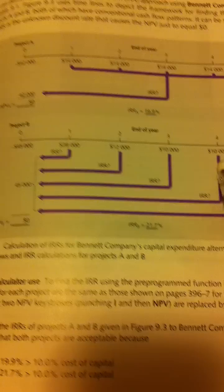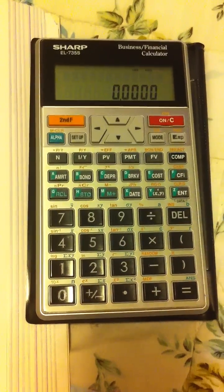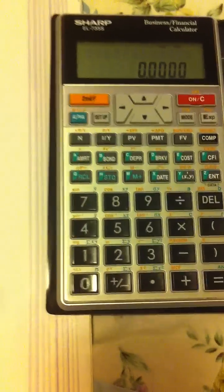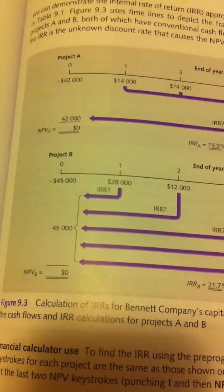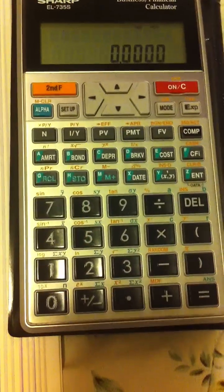This type of question is called uneven cash flow and I'm going to use the Sharp EL-735 as a calculator for IRR. First thing you need to put your initial investment, which is project B at minus $45,000.